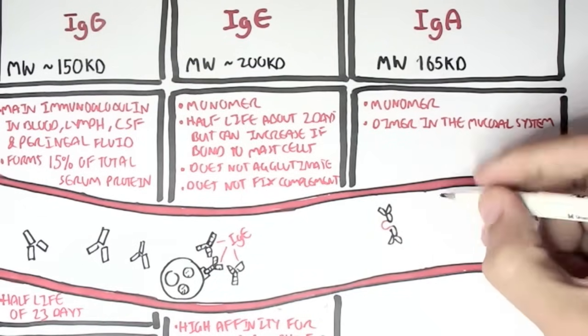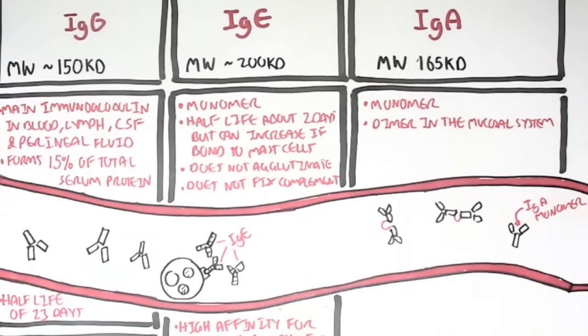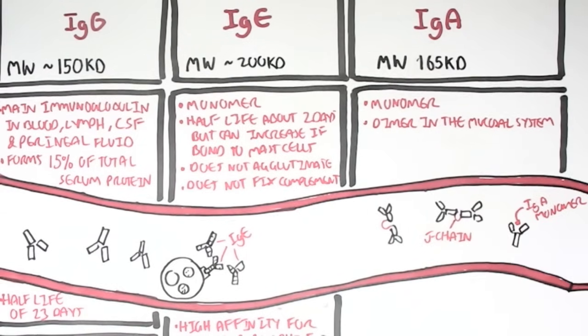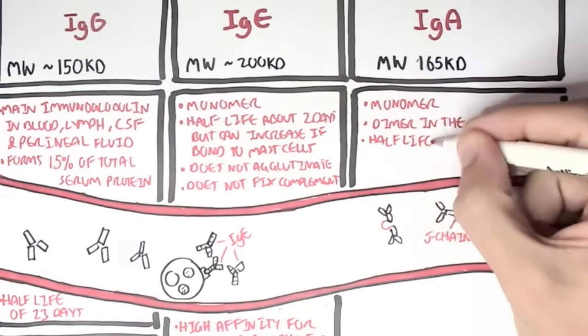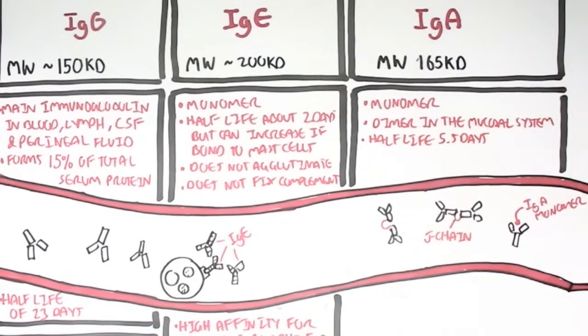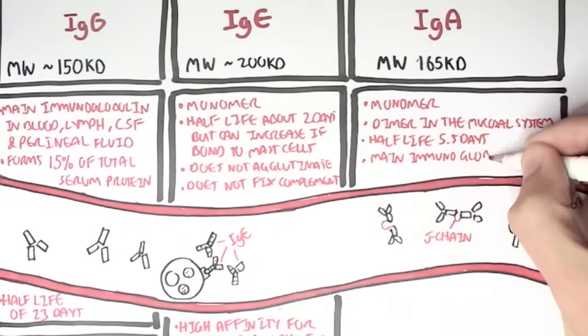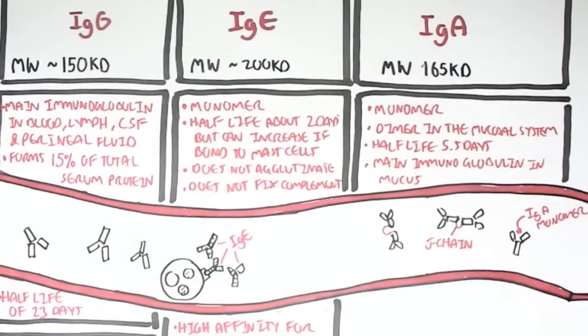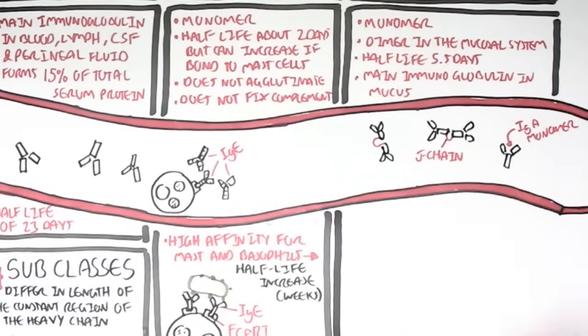If it's in a dimeric form, it is held together by what's called the J-chain. And remember, the J-chain is what we saw at IgM. It has a half-life of about 5.5 days. And it is the main immunoglobulin in the mucus. So in the respiratory tract, the gut, and the vaginal penis area.